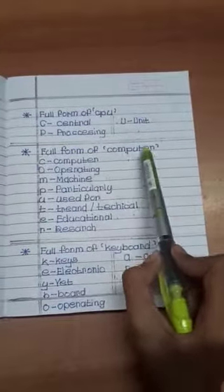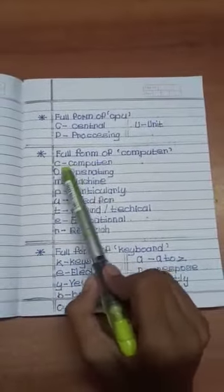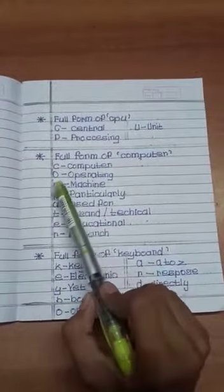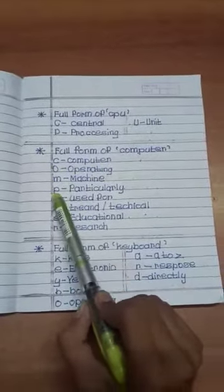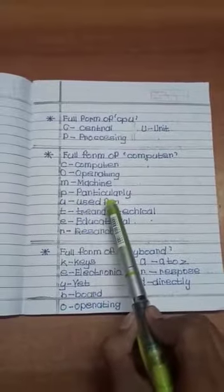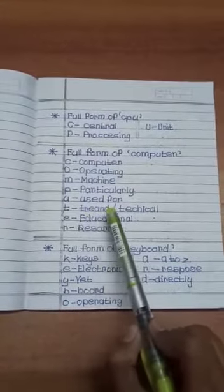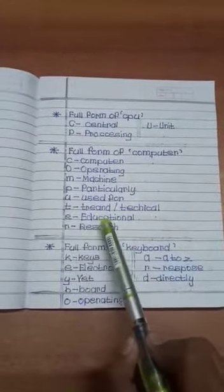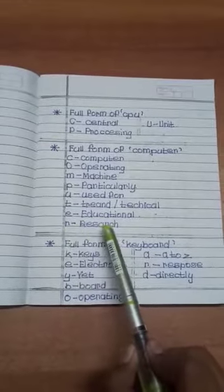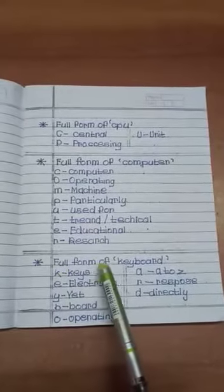Full form of computer. C means computer, O means operating, M means machine, P means particularly, U means use for, T means technical, E means educational, R means research.